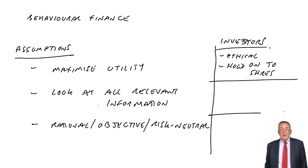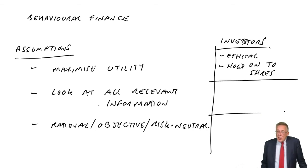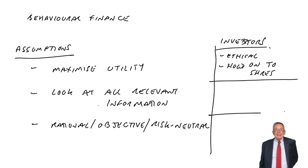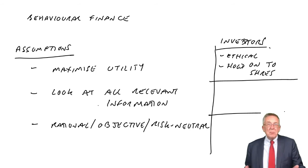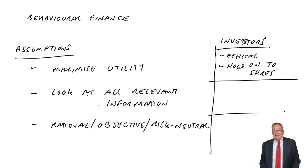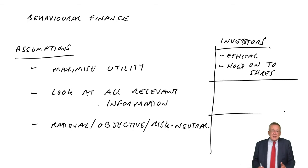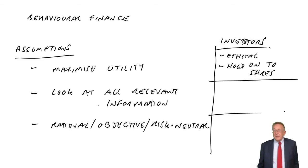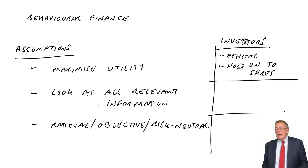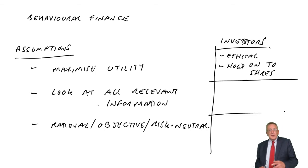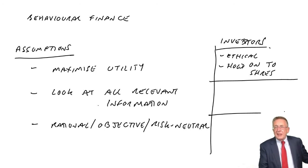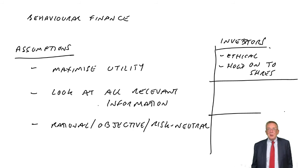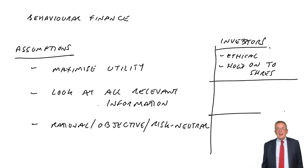Regarding the second assumption — look at all relevant information: if you're deciding whether to buy shares in a company, you should look at all the information available, such as future prospects. But other factors again come into play. Something very common is you're wondering whether to buy shares, and you see that everybody's buying shares in Company X. You think they must know something you don't, so you buy shares in Company X as well. This is called the herd instinct.